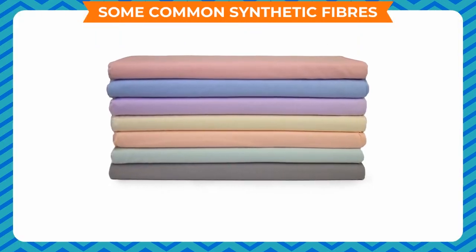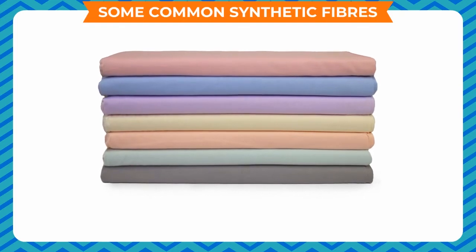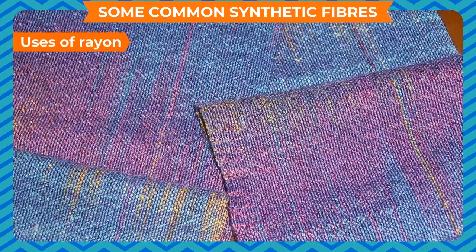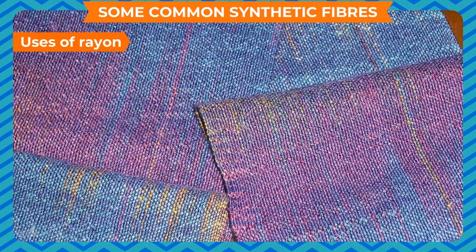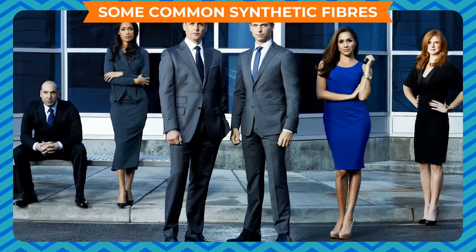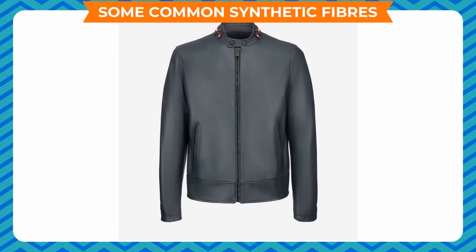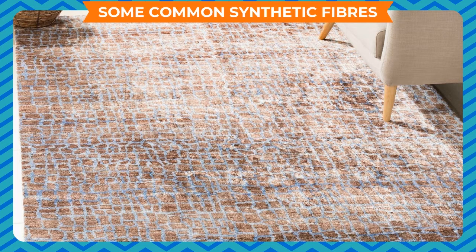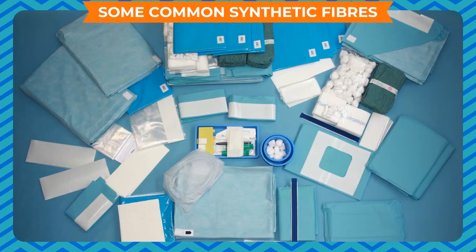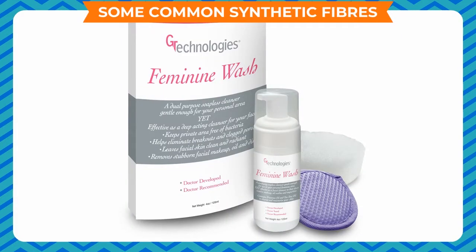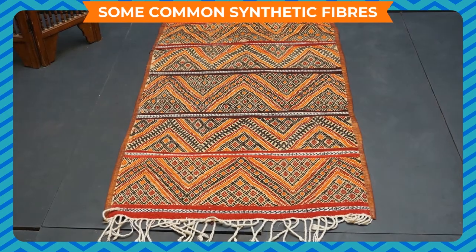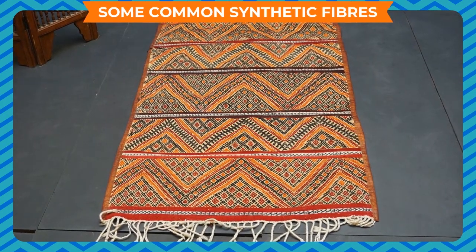Although rayon is obtained from a natural source, i.e. wood pulp, yet it is a man-made fiber. Uses of Rayon: Rayon is used in making apparels like suits, ties, jackets, lingerie etc. It is used in furnishing, surgery products and feminine hygiene products. It is mixed with cotton to make bedsheets or mixed with wool to make carpets.